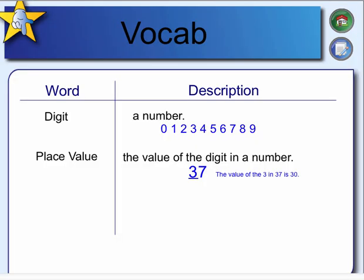Some vocabulary if you need to be reminded. Digit meaning a number — we use 0, 1, 2, 3, 4, 5, 6, 7, 8, 9. Place value: the value of the digit in a number. So for example in 37, we would say the value of the 3 in 37 is 30 because it is in the tens place.